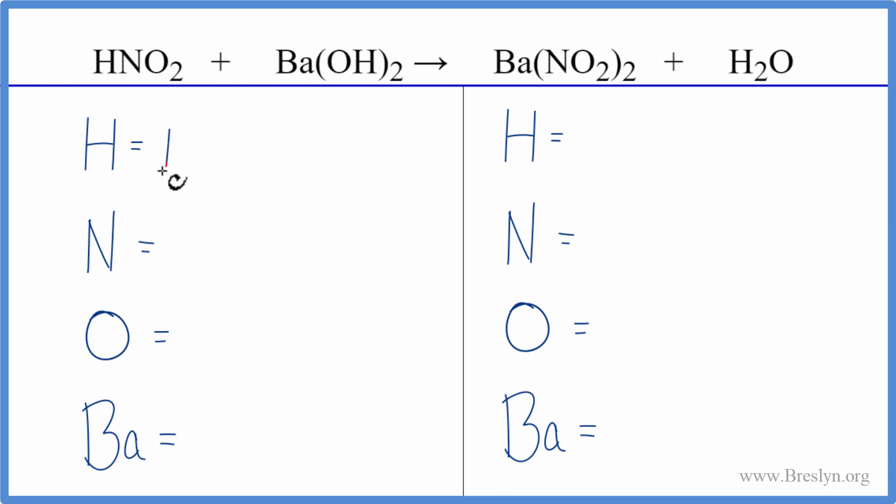We have one hydrogen right here, and be careful because we have one hydrogen here times the two, so that's two more, gives us three hydrogen atoms. We have one nitrogen, two oxygens, plus we have the one oxygen here times the two, that's two more, so we have four. Remember, this number two applies to everything in the parentheses. Then we have one barium.